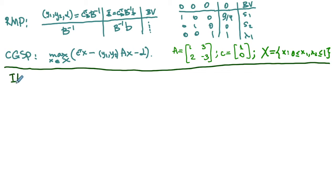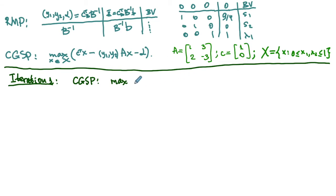For iteration one, all dual variables y₁, y₂, and α are zero, so the column-generating subproblem simplifies to: maximize x₁ subject to x ∈ X. Since X is the unit box, the optimal solution is clearly x₁ = 1.